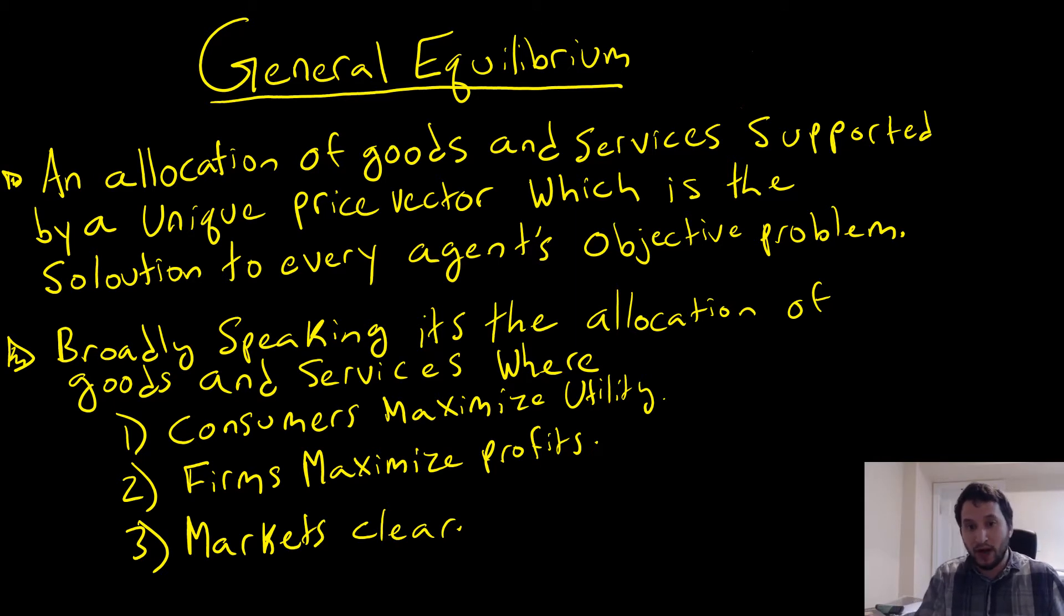And that is coordinated by a particular price vector, and that coordination is the solution to every agent's objective problem. That's the key thing here: not just one agent, not just two agents—well, it could be two agents—but every agent in our economy's objective problem.